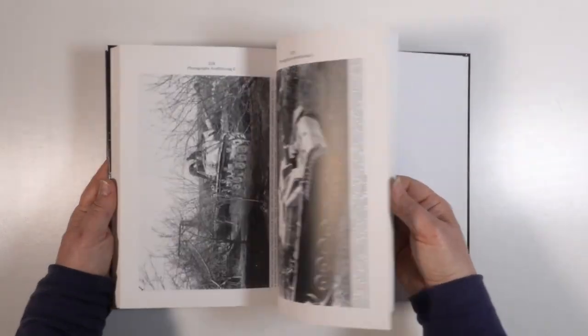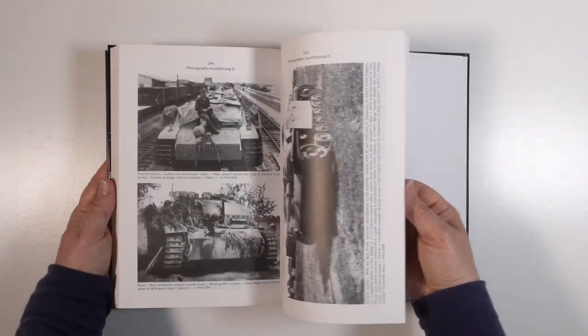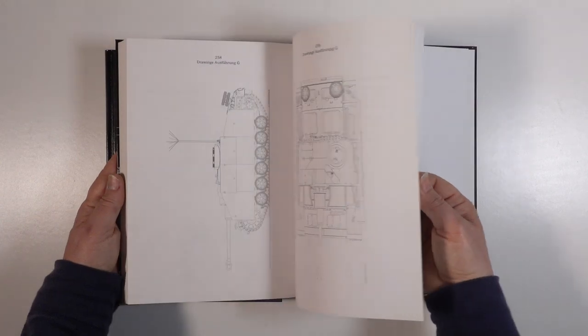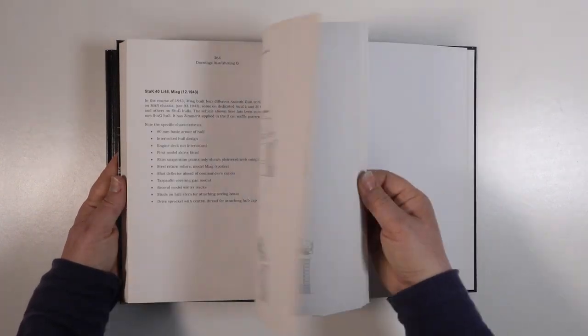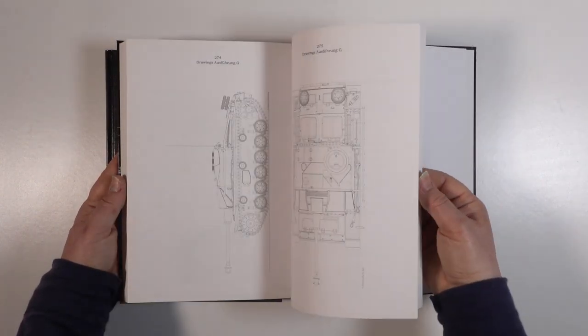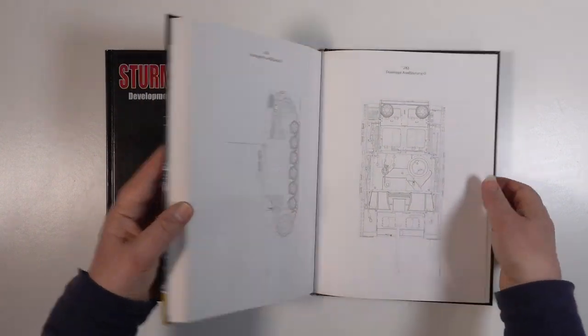For all the features I want, I'm looking at a Stug made in about late September 1944. This will allow me to have Zimmerit, 3-tone camouflage, the remote MG34, and Schurzen.